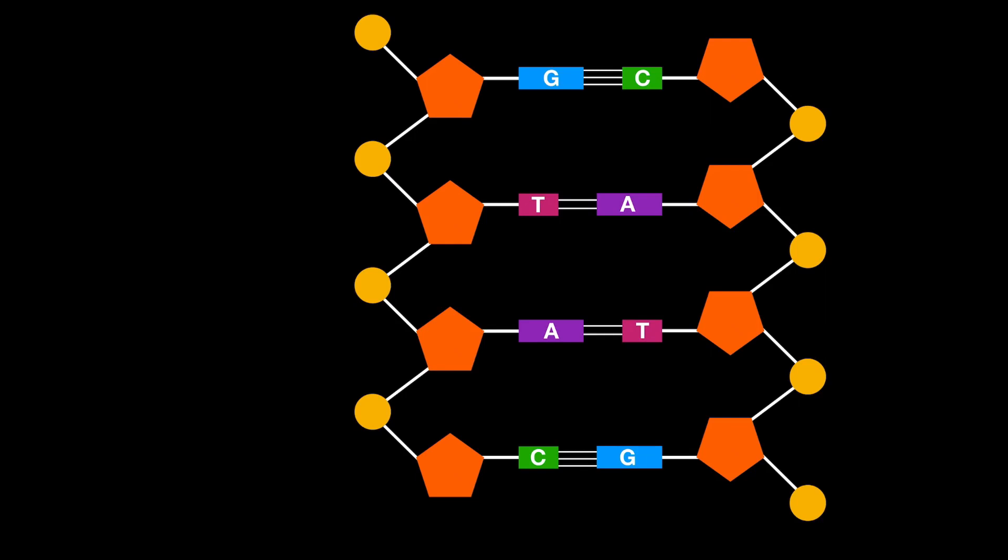You can see in the diagram that there are three hydrogen bonds between G and C while there are only two hydrogen bonds between A and T. The new syllabus states that students are not required to memorize the number of hydrogen bonds, but it may be of interest to you.